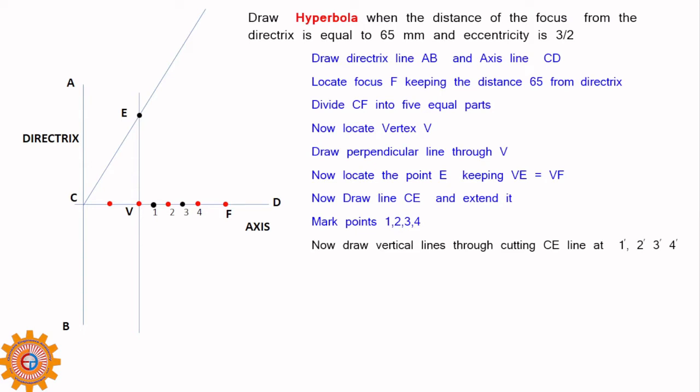Now, draw vertical lines through these 1, 2, 3, 4. Those will cut the extension line at 1 dash, 2 dash, 3 dash, 4 dash. These vertical lines will cut that inclined line called CG at 1 dash, 2 dash, 3 dash and then 4 dash. This 1 1 dash, 2 2 dash, 3 3 dash, 4 4 dash will act as radii for having these points.